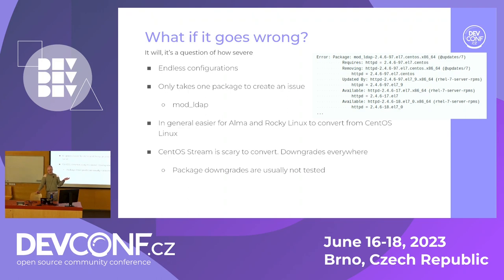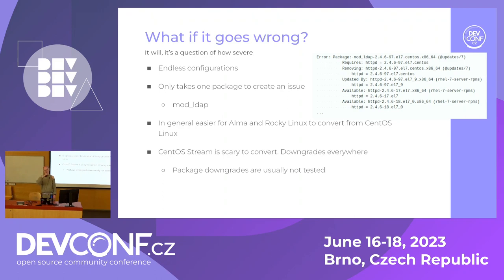In general, it's easier to convert to Alma and Rocky from CentOS than, for example, from CentOS to RHEL, because they are successors to CentOS — they're pretty much similar, almost the same system. But CentOS Stream is the big scary one, because since it's upstream from RHEL, there are going to be downgrades when you go from CentOS Stream to RHEL or something else — you have so many different downgrades. So either you just freeze it in place for a long while, which is not secure and not something you should do, and then just hope for the best.